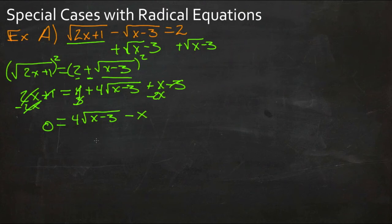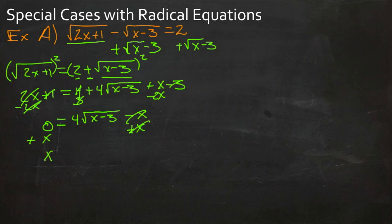Now we'll move the x over by adding x to both sides, trying to isolate this other radical. We already dealt with the first one; now we need to isolate the second one and get rid of it the same way. Adding x to both sides gives us x equals 4 times the square root of x minus 3.